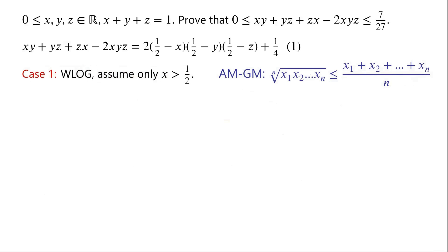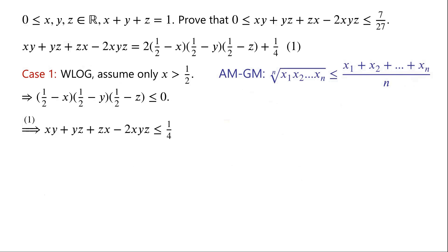Case 1: not all of x, y, and z are less than or equal to a half. Without loss of generality, we assume only x is greater than a half. Because (1/2 minus x) is less than zero, while (1/2 minus y) and (1/2 minus z) are greater than or equal to zero, the product (1/2 minus x)(1/2 minus y)(1/2 minus z) must be less than or equal to zero. Then from equation 1, xy plus yz plus zx minus 2xyz is less than or equal to 1/4, which equals 7/28, which is less than 7/27. So the right side inequality holds in this case.